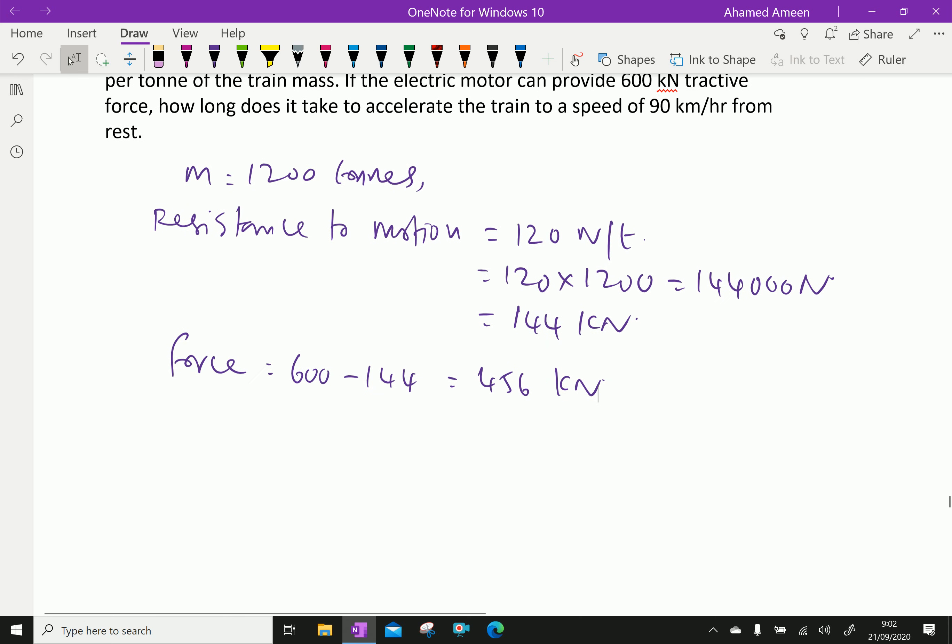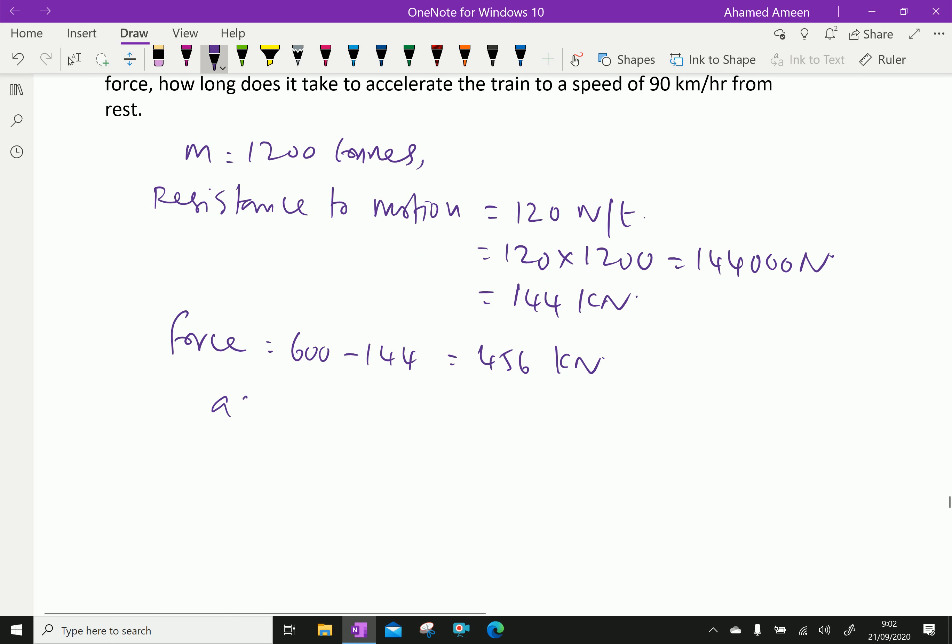Acceleration of the electric train: a equals net force by mass, which is 456 by 1200, which equals 0.38 meter per second squared.